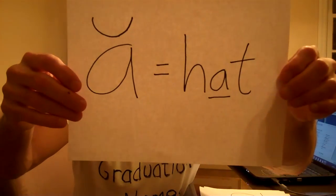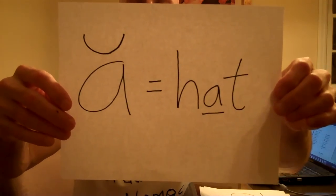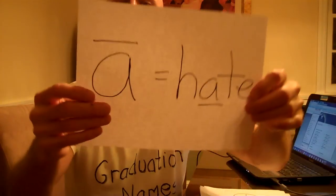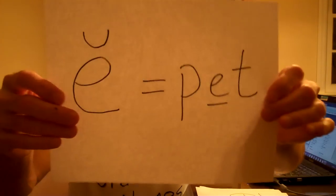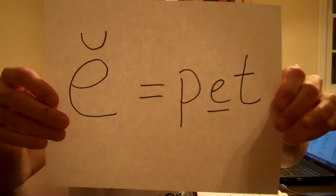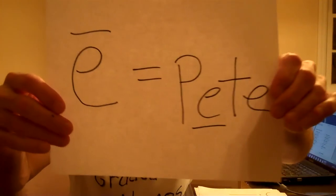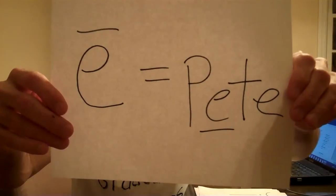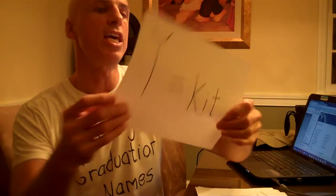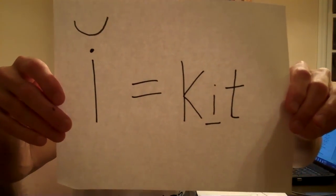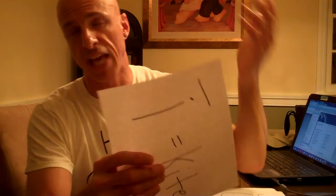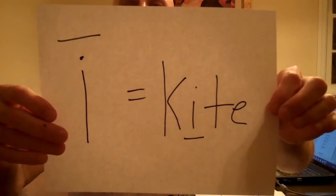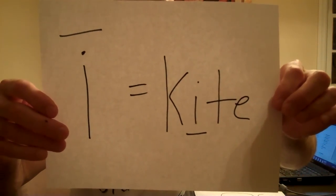Let's show you how to use it. The soft sound A has a horseshoe above it, as in 'hat' — A. The hard sound of A has a line across it, same sound as in 'hate' — A. Next, the soft E with a horseshoe above it has the E sound as in 'pet.' The hard sound of E has a straight line above it and has the hard sound as in 'Pete' — E. The letter I with the horseshoe above it, the soft sound, has the sound of I as in 'kit.' The hard I sound, as in 'kite' — I.